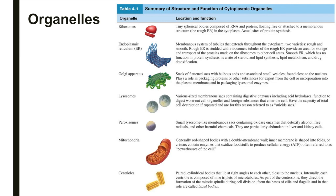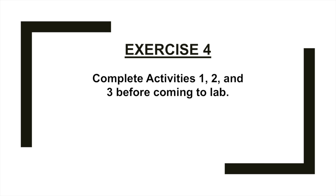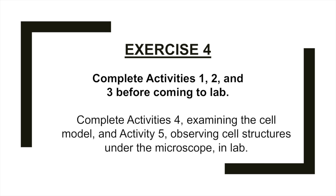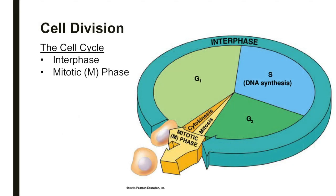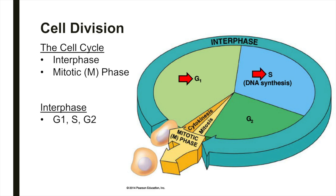Please complete activities 1, 2, and 3 before coming to lab. We will complete activities 4 and 5 during lab. The cell cycle is the series of changes that a cell goes through from the time it is formed until it reproduces. The two main periods of the cell cycle are interphase and the mitotic phase, or M phase. During interphase, the cell grows and carries out its usual activities. Interphase is divided into the G1 or growth phase, the S phase where the cell continues to grow and DNA is replicated, and the G2 phase where the cell makes its final preparations for division.